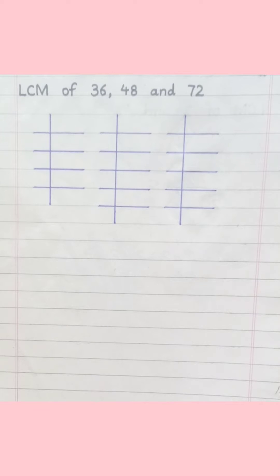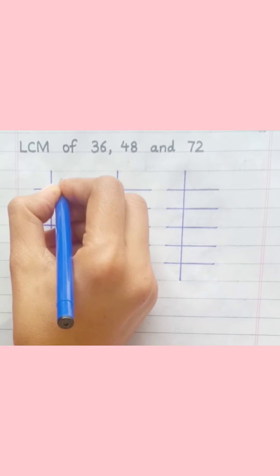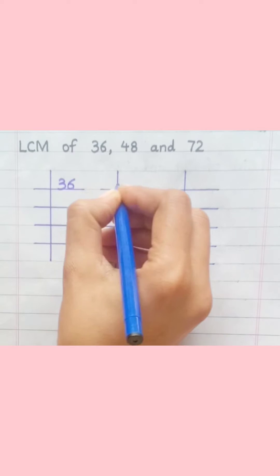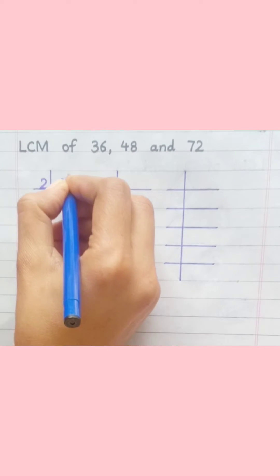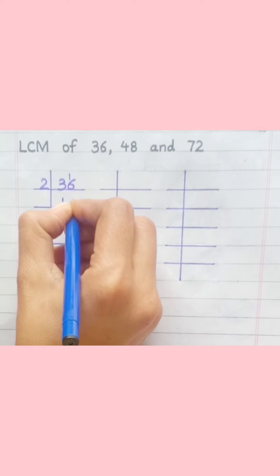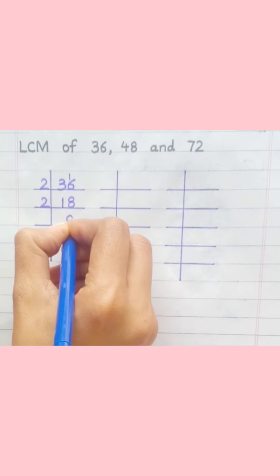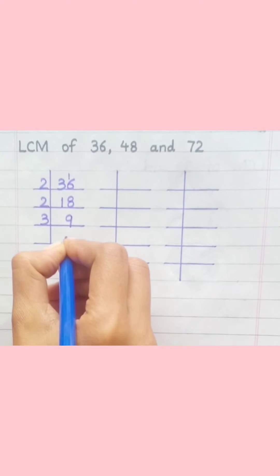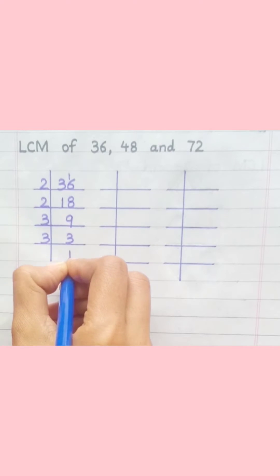LCM of 36, 48 and 72. Starting with 36: 2 1s are 2, 2 8s are 16, 2 9s are 18, 3 3s are 9, 3 1s are 3.